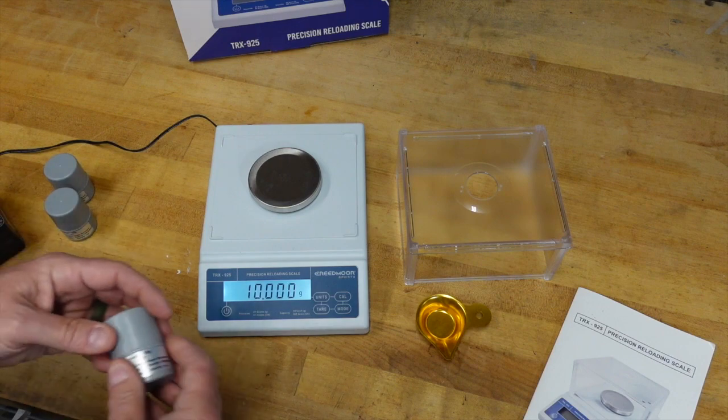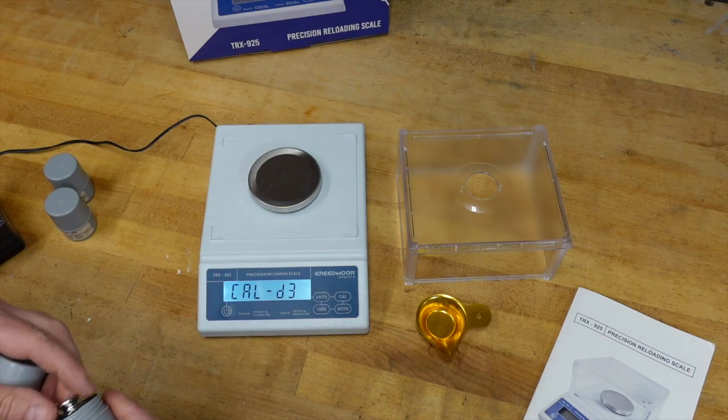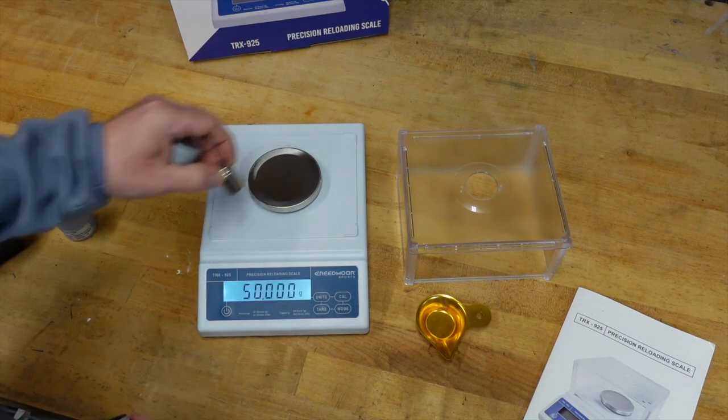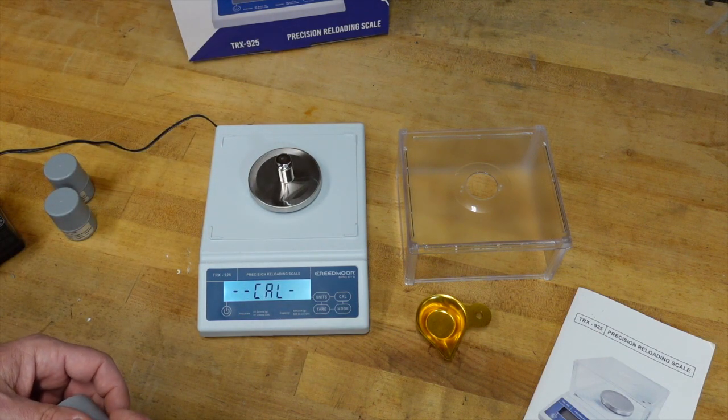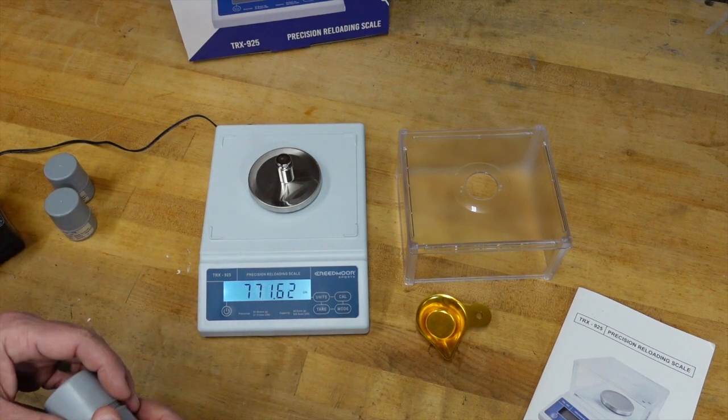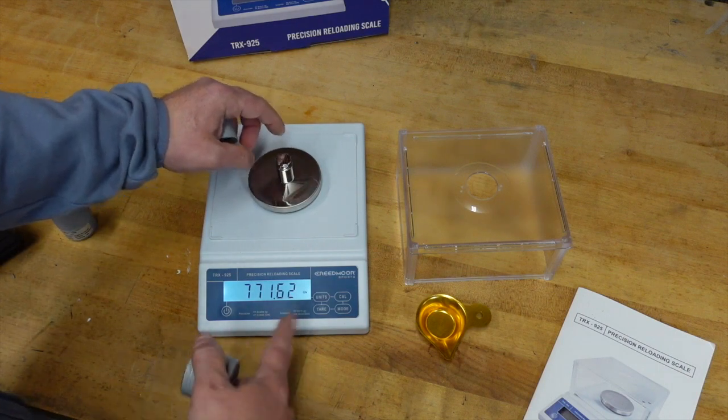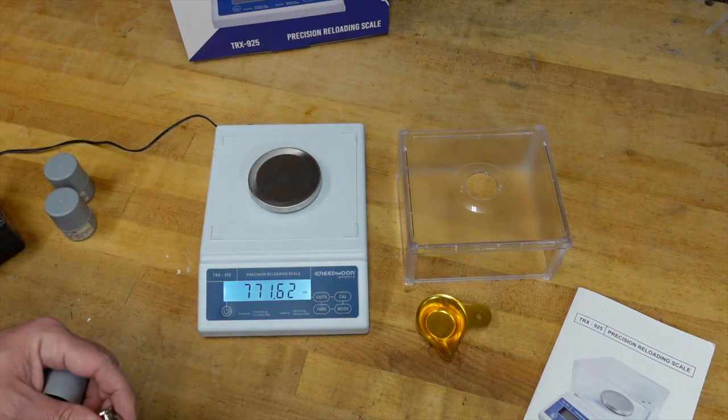And now it's going to ask for the last calibration weight, which is 50. Now the scale will go up to 925 grains or 60 grams, your choice.